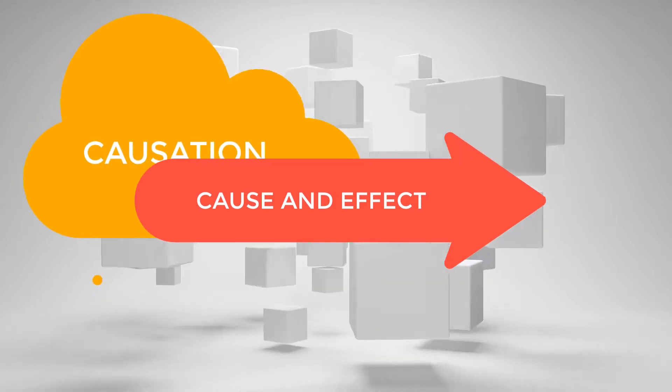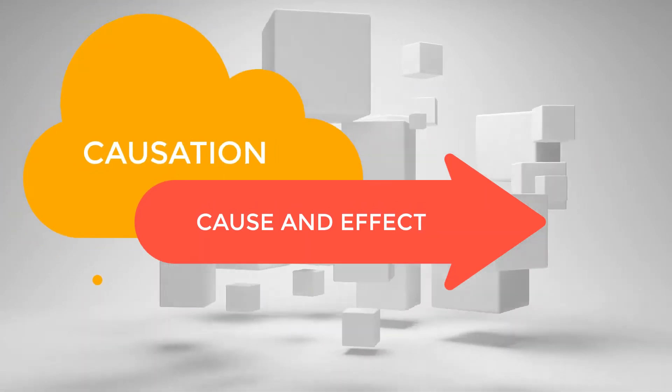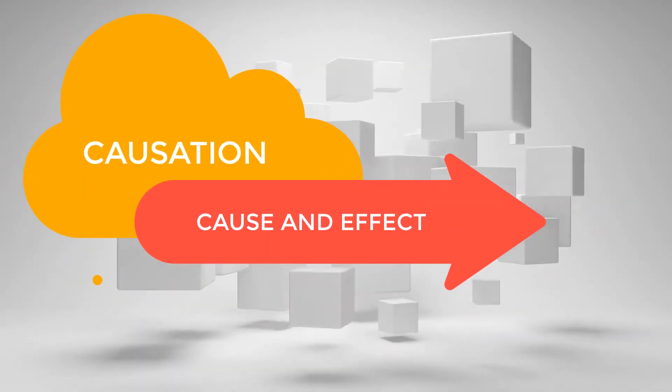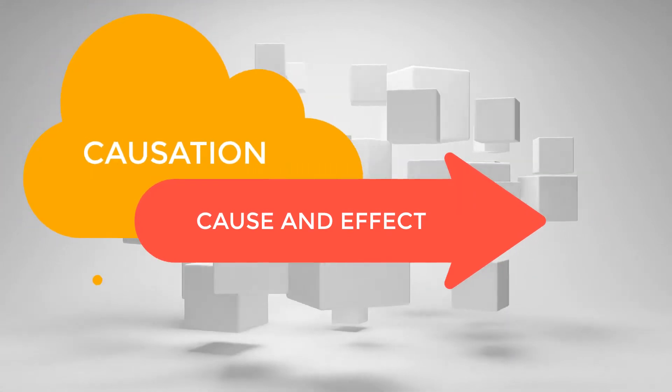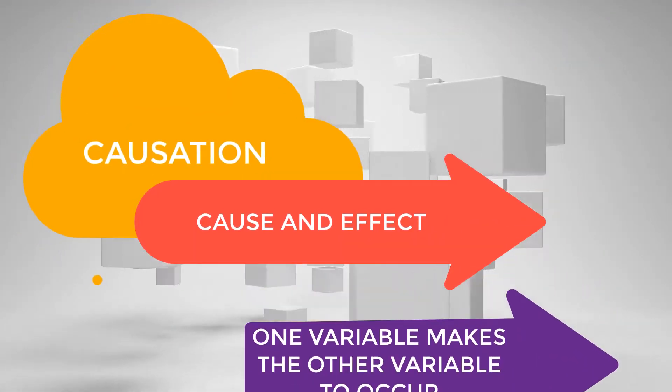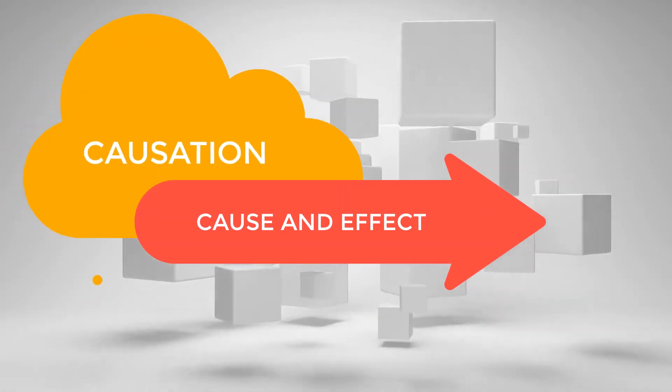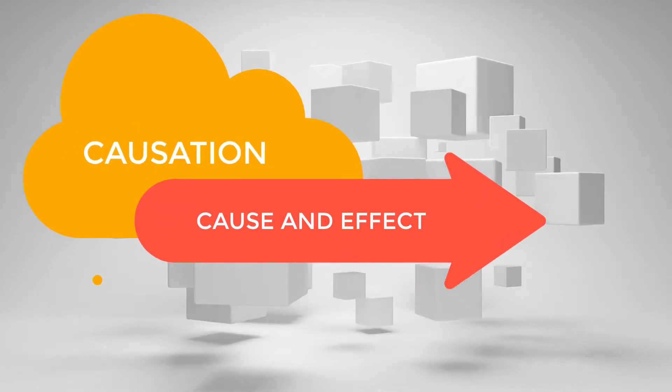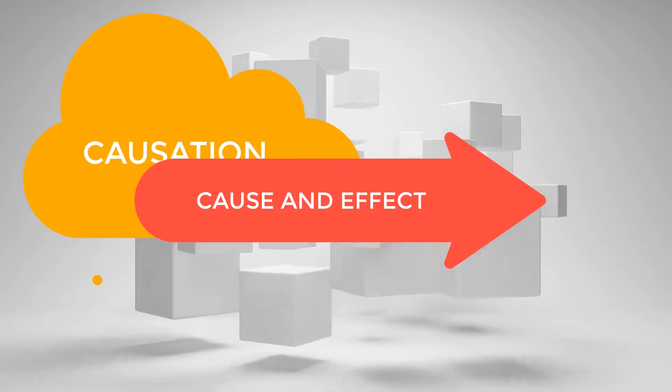It says any change in the value of one variable will cause a change in the value of another variable, which means one variable makes the other occur. An example of causation is when a person loses weight due to regular workout.